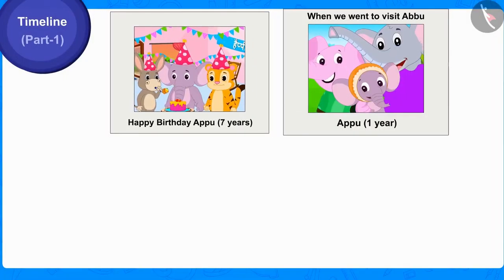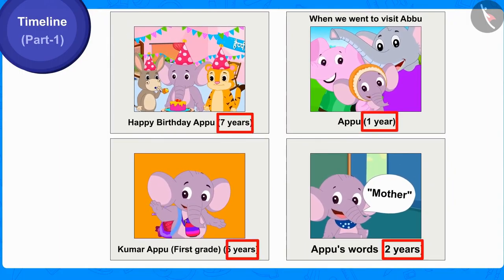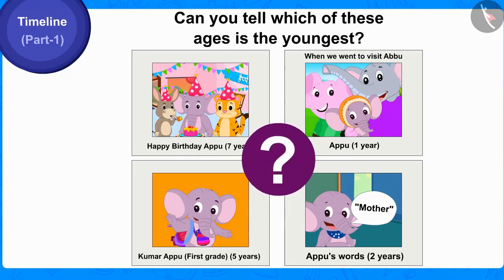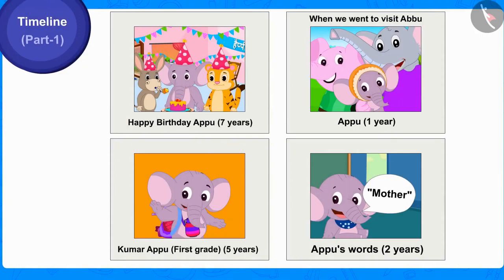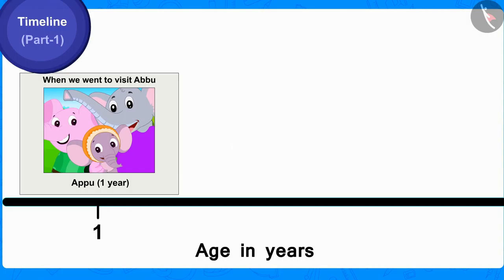Children, here we have four pictures of Appu and his age in those pictures. Can you tell which of these ages is the youngest? Correct. Out of these, the picture of Appu which was taken when he was one year old will be shown first on the timeline by writing one year on it like this.